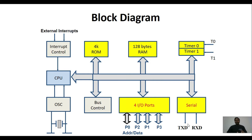The next peripheral is the serial port, used for transmitting or receiving data serially. There are two pins: TXD and RXD. The TXD pin is used for transmitting data serially from 8051 to the external device, whereas the RXD pin is used for receiving data serially from the external device to 8051. We also have four different I/O ports, each of 8 bits, for interfacing external devices.